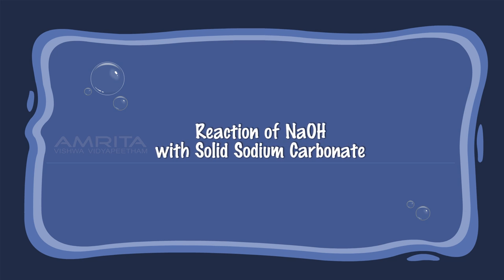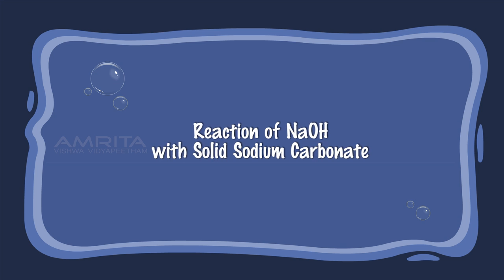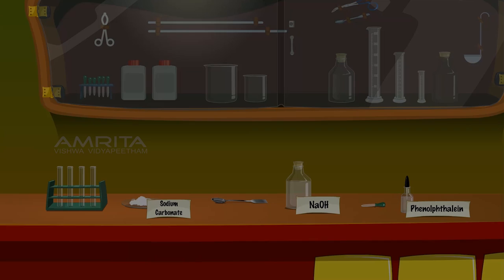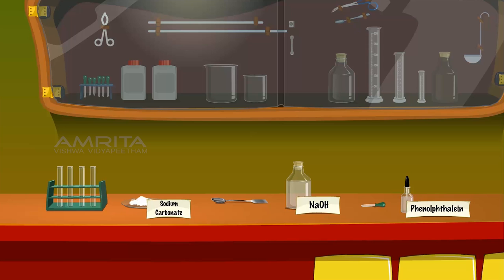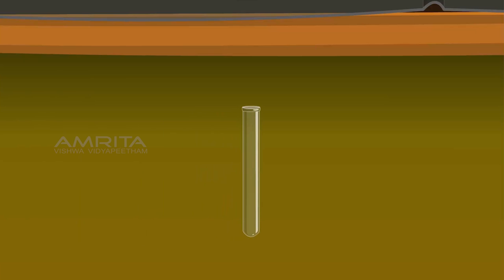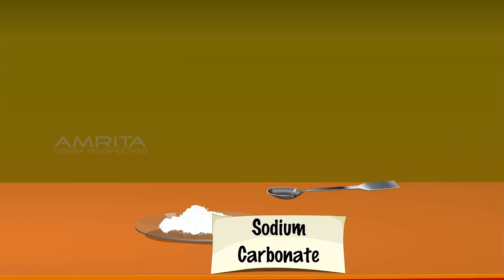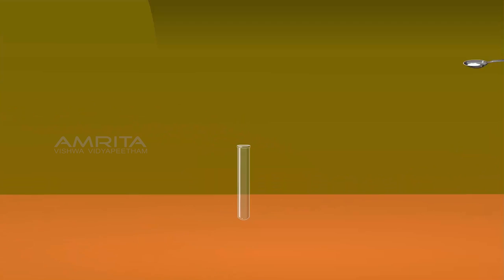Reaction of NaOH with Solid Sodium Carbonate. We require a test tube, a test tube rack, some sodium carbonate in a dish, a spatula, NaOH solution, a dropper, and phenolphthalein solution. Take the test tube and using the spatula, take some sodium carbonate from the dish and transfer the contents into the test tube.